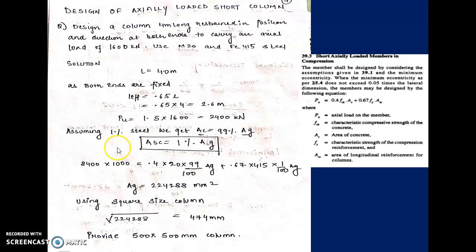If we assume 1% steel, the area of concrete becomes 99% of gross area. Gross area is the total area of the column — for example, 300×400 = 12,000 mm². With 1% steel, 99% is the area of concrete, 1% is the area of steel, and 100% is the gross area. Using the formula from clause 39.3 of IS 456, we can calculate AG (gross area).